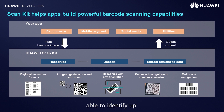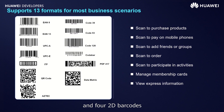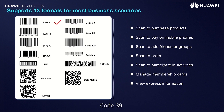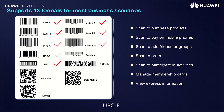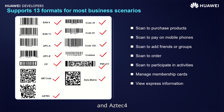ScanKit is also able to identify up to 5 barcodes at the same time. The 13 barcode formats supported by ScanKit include 9 1D barcodes and 4 2D barcodes. The 9 1D barcodes are EAN-8, Code 39, EAN-13, Code 93, UPC-A, Code 128, ITF, UPC-E, and Codabar. The 4 2D barcodes are QR code, Data Matrix, PDF-417, and Aztec.